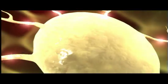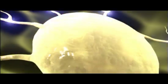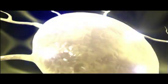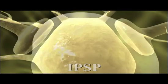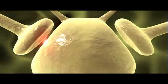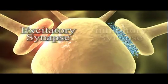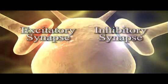An excitatory postsynaptic potential is called an EPSP. An inhibitory postsynaptic potential is called an IPSP. A synapse that produces EPSPs in the postsynaptic cell is called an excitatory synapse, while a synapse producing IPSPs is an inhibitory synapse.